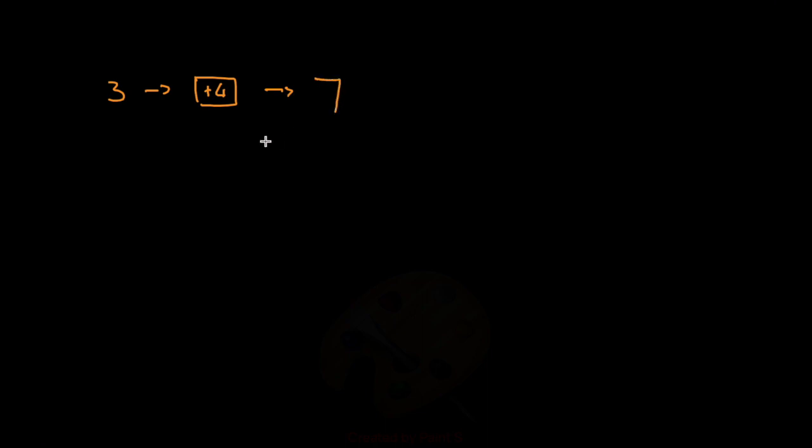For example, if I have the number 3 and I add a 4 onto it, then I get an output of 7. So the 3 is the input, the plus 4 is the operation the function has performed on the input, and the 7 would be my output. This whole thing over here is what is known as the function.